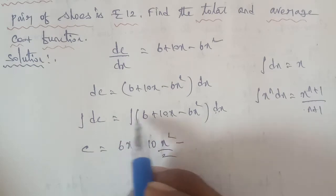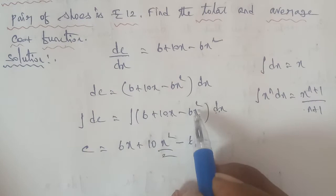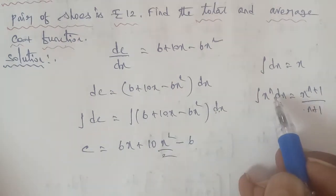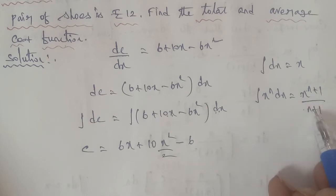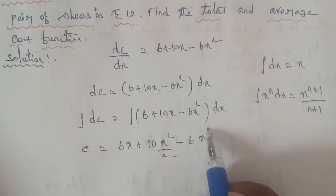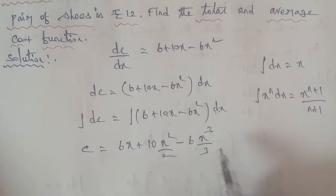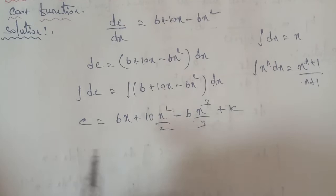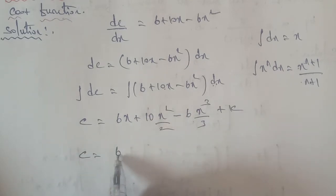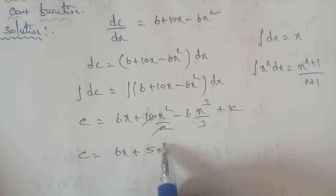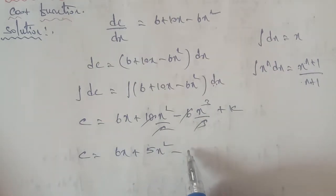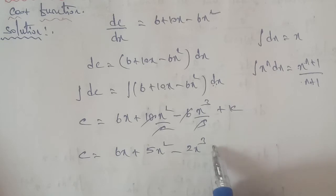Integration of minus 6X square DX — minus 6 is the constant. For X square, N equals 2, so the formula gives X power 2 plus 1 by 2 plus 1, that is X power 3 by 3. After cancellation: 10 times X square by 2 gives 5X square, and minus 6 times X cube by 3 gives minus 2X cube. So C is equal to 6X plus 5X square minus 2X cube plus k.